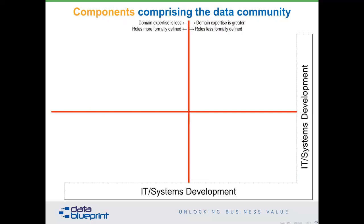On the horizontal axis, at the bottom of the horizontal line, they're going to encounter governed data more directly, whereas on top, there are less direct encounters with it. Below the line, more time is dedicated to this process; above the line, less time is dedicated to it.